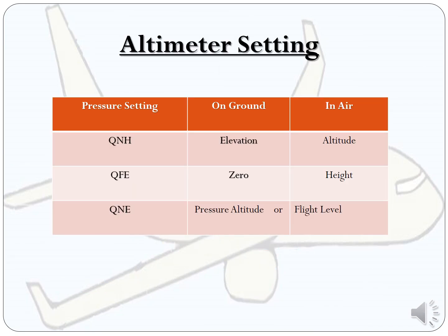Here I have elaborated the Q codes further with two conditions: aircraft on the ground, and aircraft in the air. When setting QNH — if the aircraft is on the ground, the altimeter will show the elevation of the airport; if in the air, it will show the altitude of the aircraft. When setting QFE — on the ground the altimeter shows 0; in the air it shows the height of the aircraft. When setting QNE, whether on the ground or in the air, it will show pressure altitude or flight level.